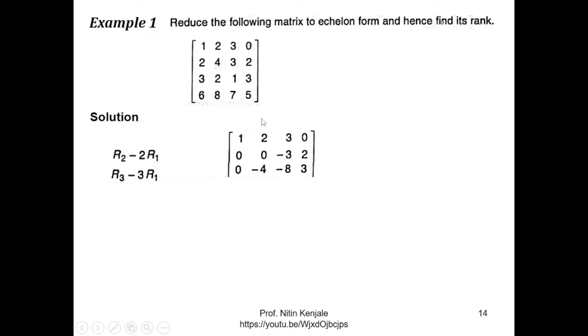Lastly I see elements in the fourth row are sum of elements in the first three rows. That means this 6 is sum of 1 plus 2 plus 3. Similarly this 8 is sum of 2 plus 4 plus 2. So we can subtract first three rows from fourth row to get all zeros in the fourth row.